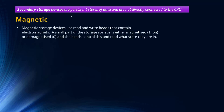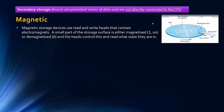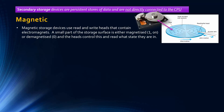The first technology is magnetic storage. These devices use read and write heads that contain electromagnets. A small part of the storage surface is either magnetized — representing one in binary — or demagnetized, representing zero, and the heads control this and read the state. Mainly we talk about hard disks or hard drives. The read-write head stays in position while the disk spins. The surface is covered by demagnetized and magnetized bits representing ones and zeros. This is what it actually looks like as a component — this disk is constantly moving, spinning, and it's quite noisy as a mechanical component.